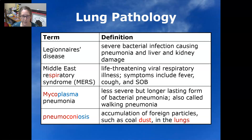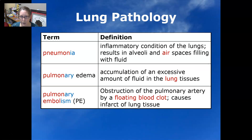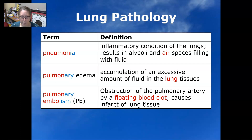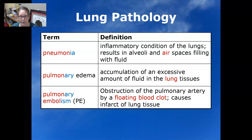Pneumoconiosis is the accumulation of foreign particles such as coal dust in the lungs — 'conio' means dust. Pneumonia is an inflammatory condition of the lungs resulting in alveoli and air spaces filling with fluid. Pulmonary edema is an accumulation of excessive fluid in the lung tissues that can cause one to almost drown in their own fluids. Pulmonary embolism, or PE, is an obstruction of the pulmonary artery by a floating blood clot or embolus, cutting off blood flow and oxygenation to tissue below, which can cause tissue death and lung collapse.